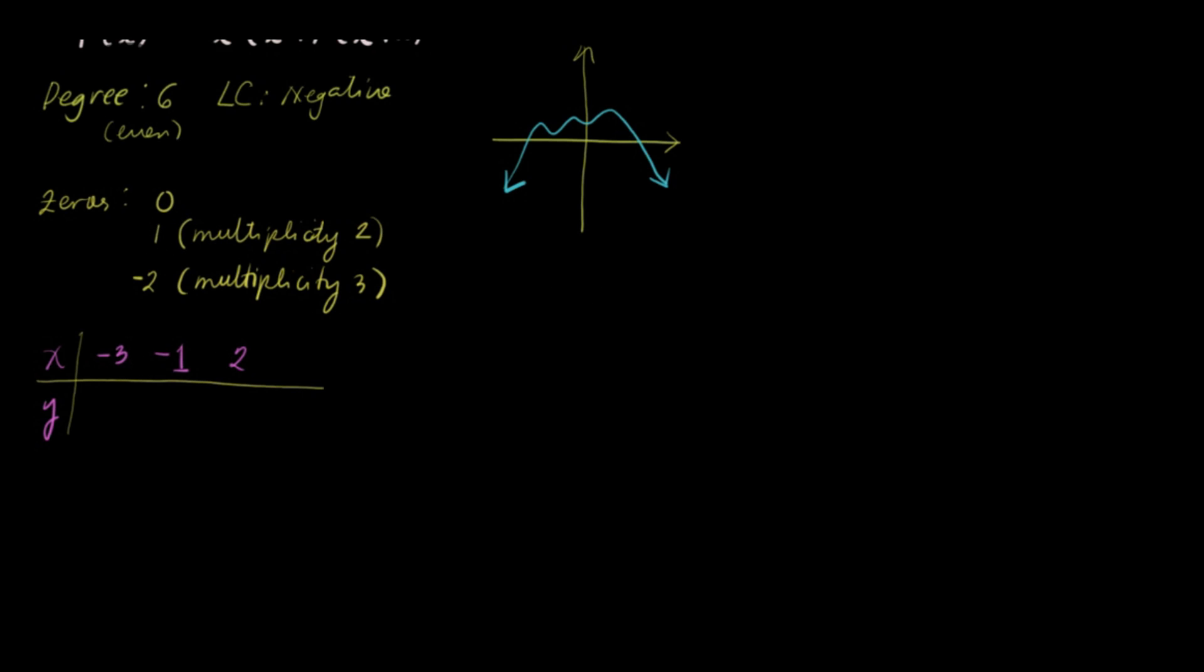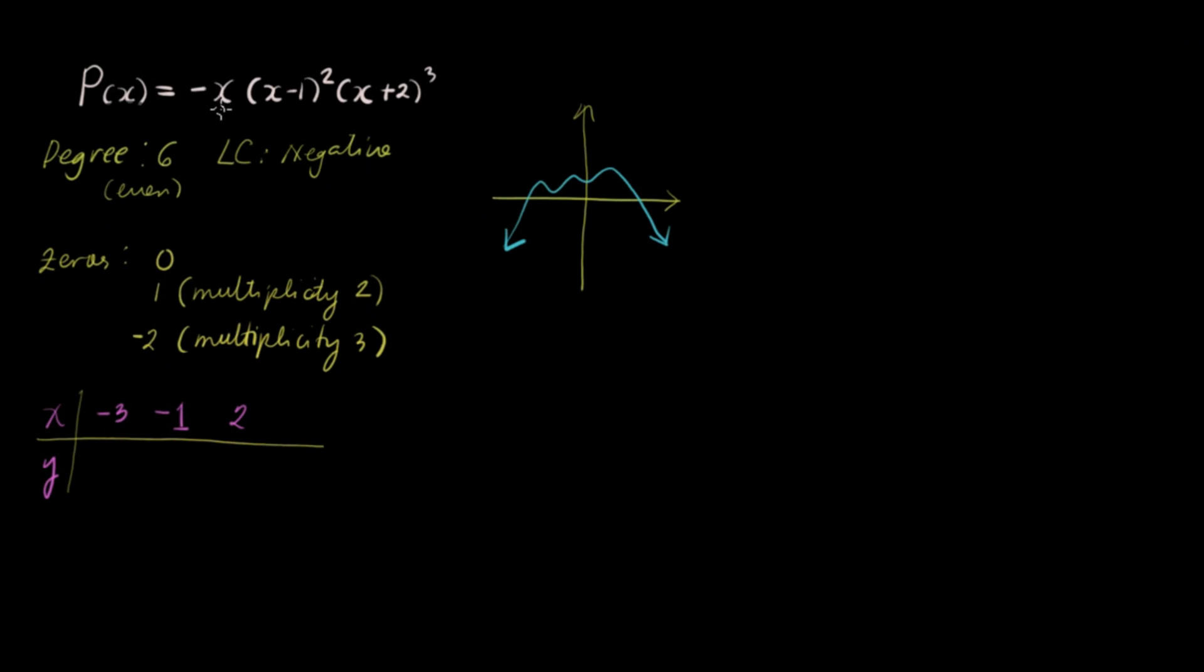Let's substitute negative three. So, we have P of negative three. So, let's have a solution here. P of negative three is equal to... It's minus minus three. So, that will become positive three. Negative three minus one squared is negative four squared. So, it's sixteen. And then, what's this? Negative three plus two. That is negative one cubed. That's negative one. So, we have negative... sorry. So, sixteen times three is twenty-four, two... is that fifty? Fifty-four? Yeah, fifty-four. So, this is fifty-four. Negative fifty-four.